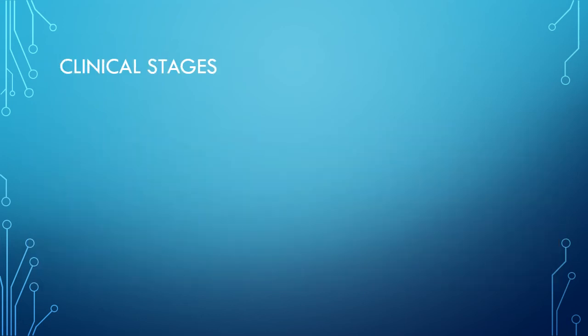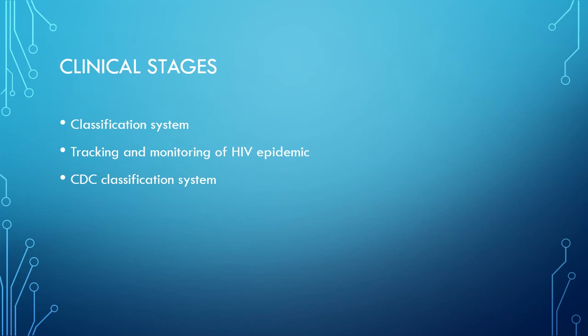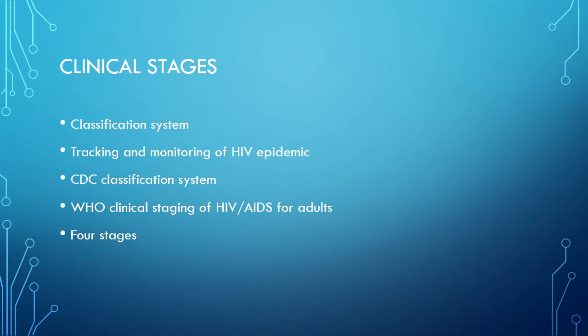Classification systems for HIV have been developed for tracking and monitoring the HIV epidemic and providing clinicians and patients with information about HIV disease stage and clinical management. Two systems are currently used worldwide. The first is the CDC classification system, which classifies HIV into nine stages based on clinical condition and CD4 T cell count. The most frequently used is the WHO clinical staging of HIV/AIDS for adults, based on clinical condition with four stages.